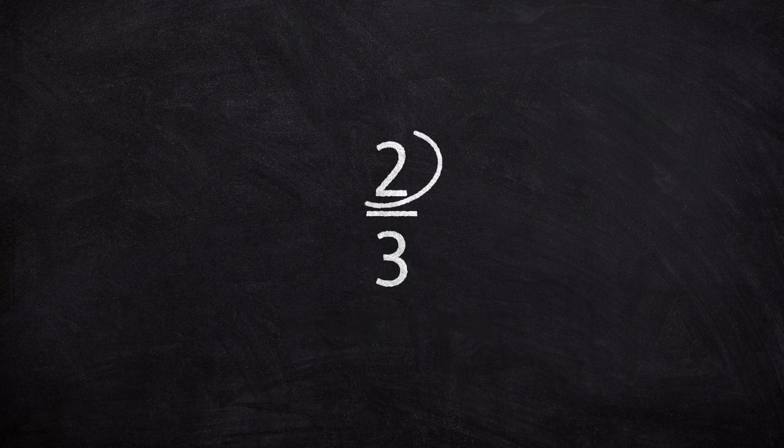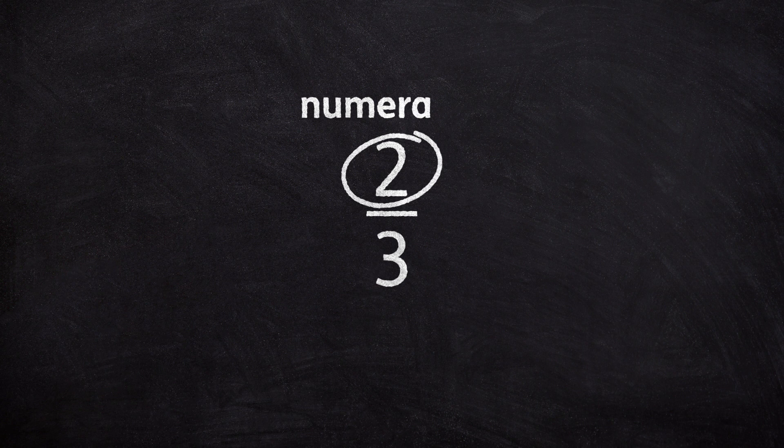The top number of a fraction is called the numerator. The numerator tells us how many of the equal parts we have.